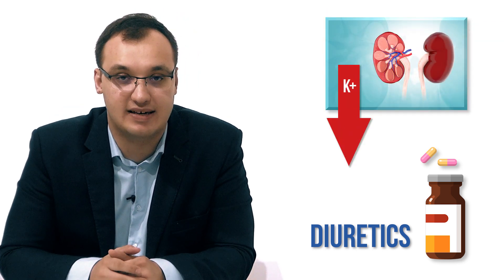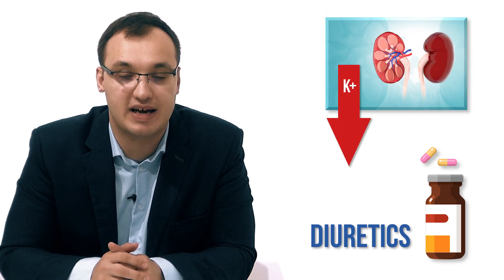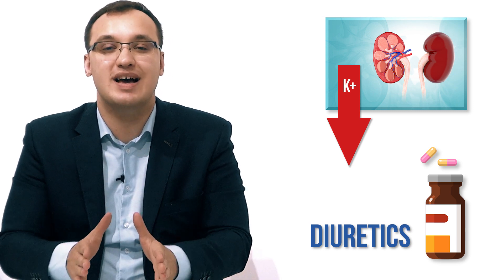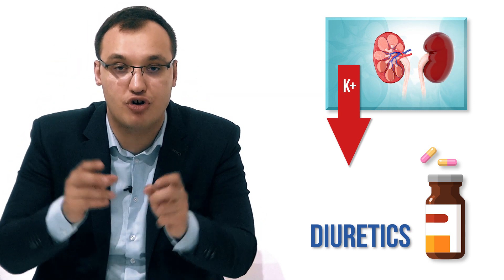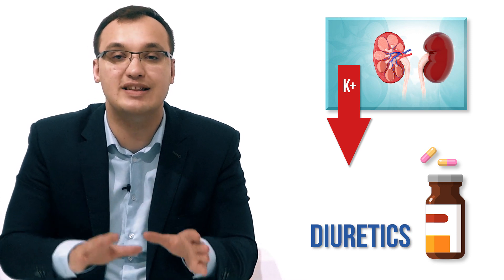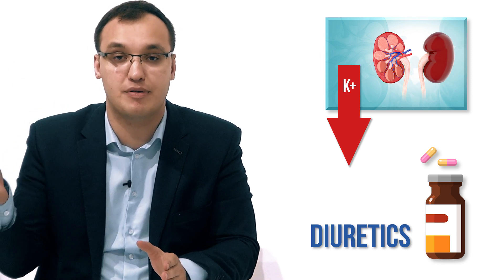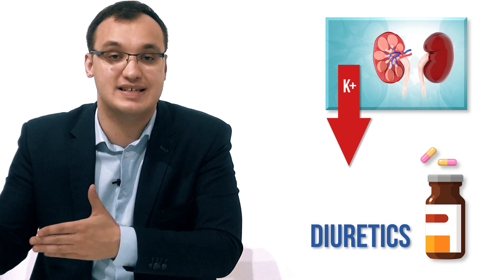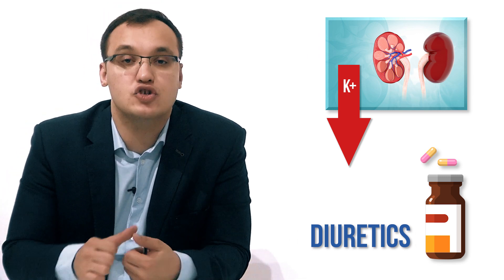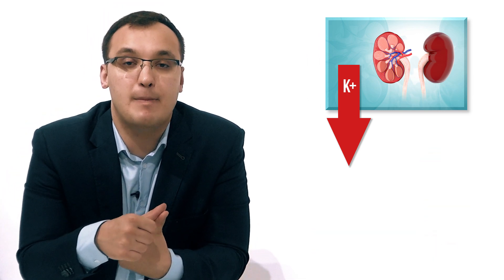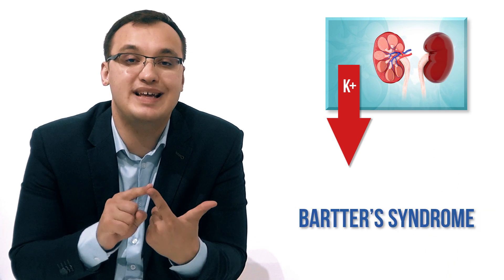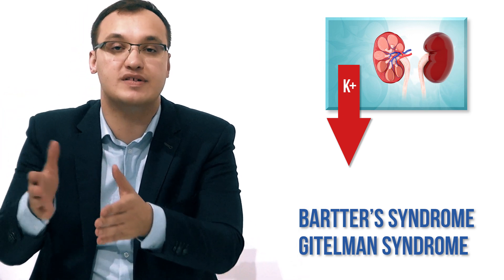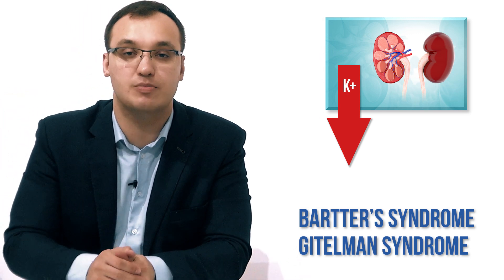Diuretic use also increases the excretion of potassium by the kidneys. As you can see, this is not related to the internal potassium balance — it is related to an external factor, namely the kidneys. Additionally, there are syndromes such as Bartter syndrome and Gitelman syndrome. In these cases we are also dealing with alkalosis and thereby increased excretion of potassium by the kidneys.